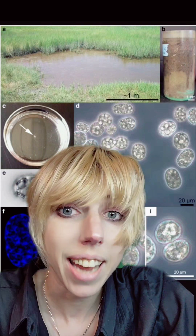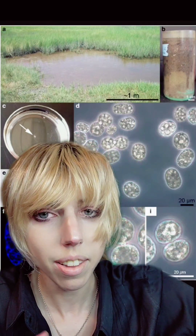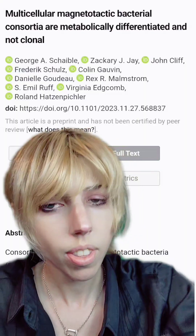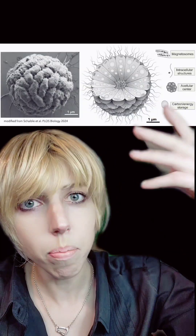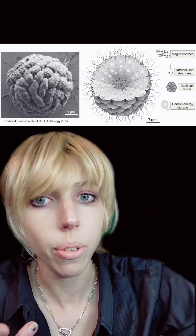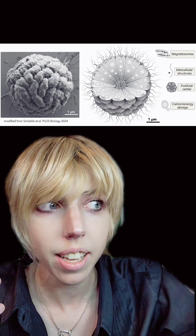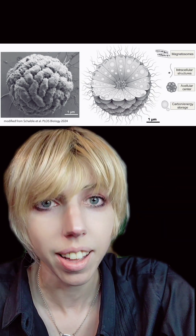There's a kind of bacteria called magnetotactic. They have little inclusions in their bodies of metals that help them orient themselves in space. Certain varieties will form consortiums — that's a multicellular cluster. Until now it was believed these were just clones, but they're not. They're actually each an individual, and they're metabolically diverse, meaning they're not related.